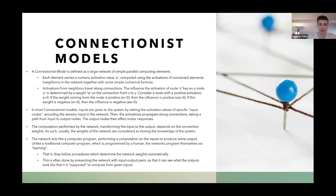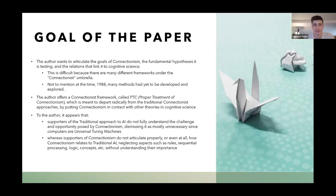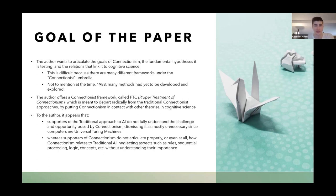Learning is usually done by giving the network an input-output pair, showing the network what its output needs to look like from given inputs. The goal of this paper is to articulate the goals of connectionism, the fundamental hypotheses it's testing, and its relations to cognitive science. This is difficult because there are many different frameworks under the connectionist umbrella, and at the time those methods had yet to be fully developed.